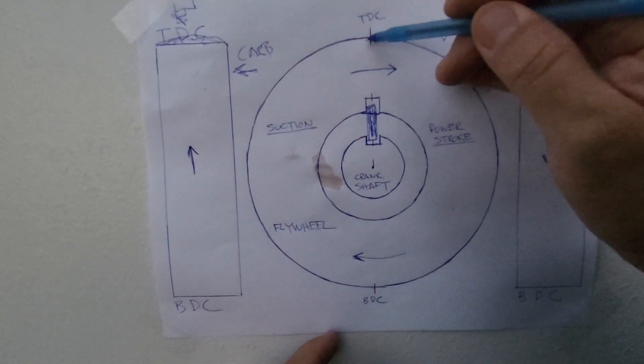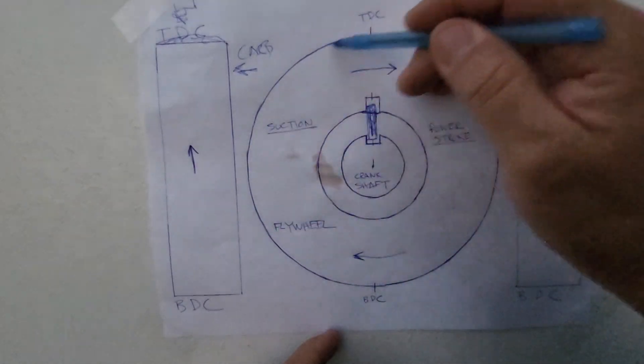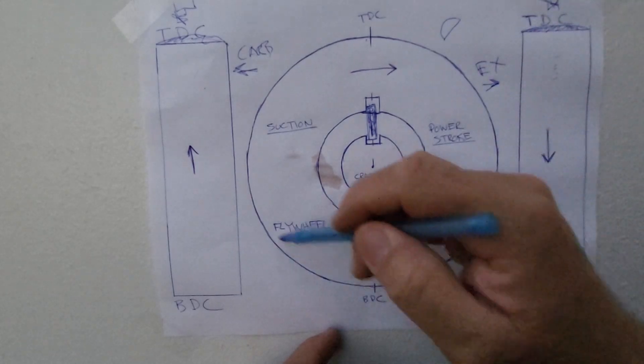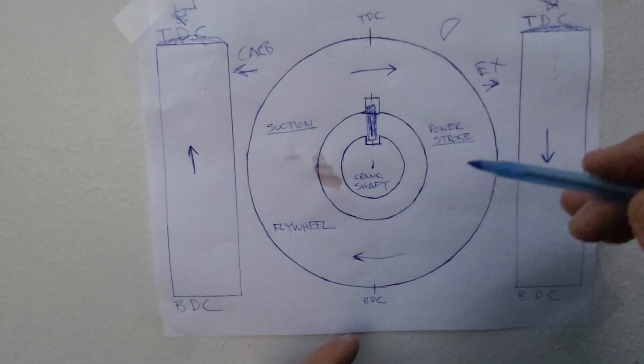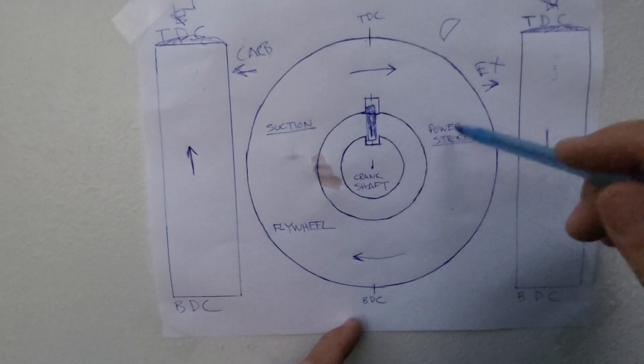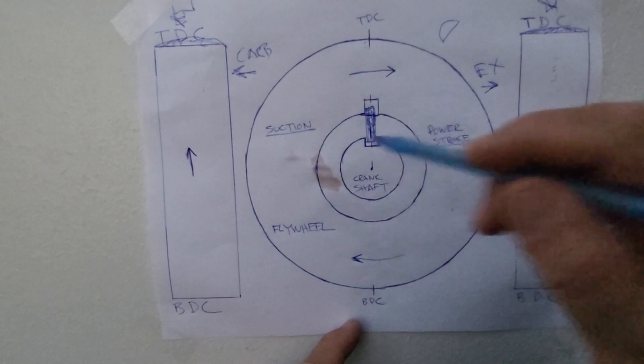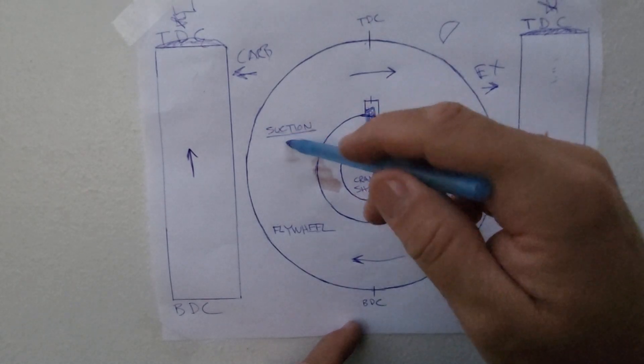So ignite, power stroke, return, suction. Ignite, power stroke, return, suction. And that's the cycle. That's the two-stroke cycle on a two-stroke engine. The power stroke and the suction stroke. Exhaust, intake. Exit, enter.